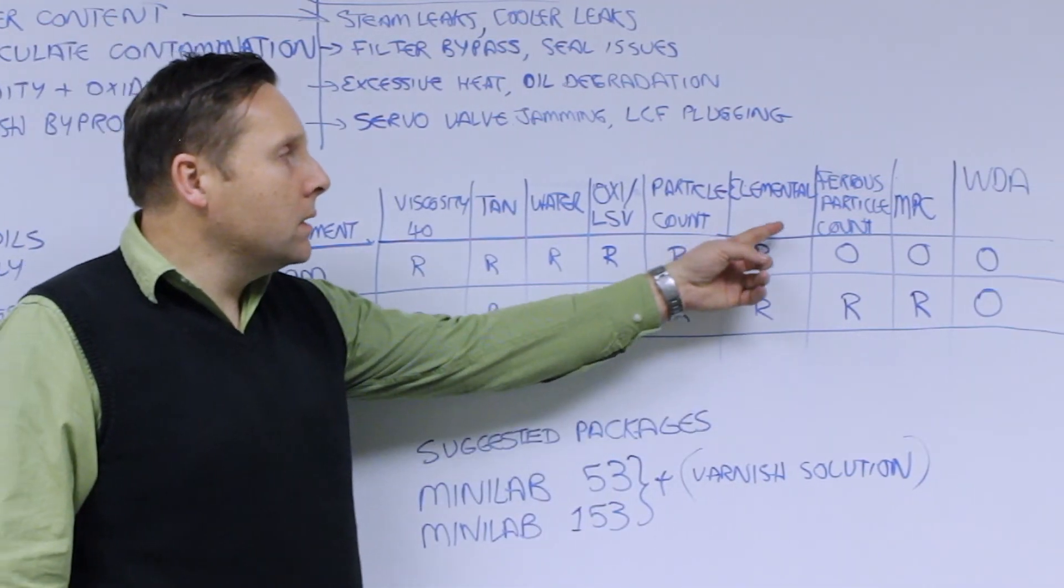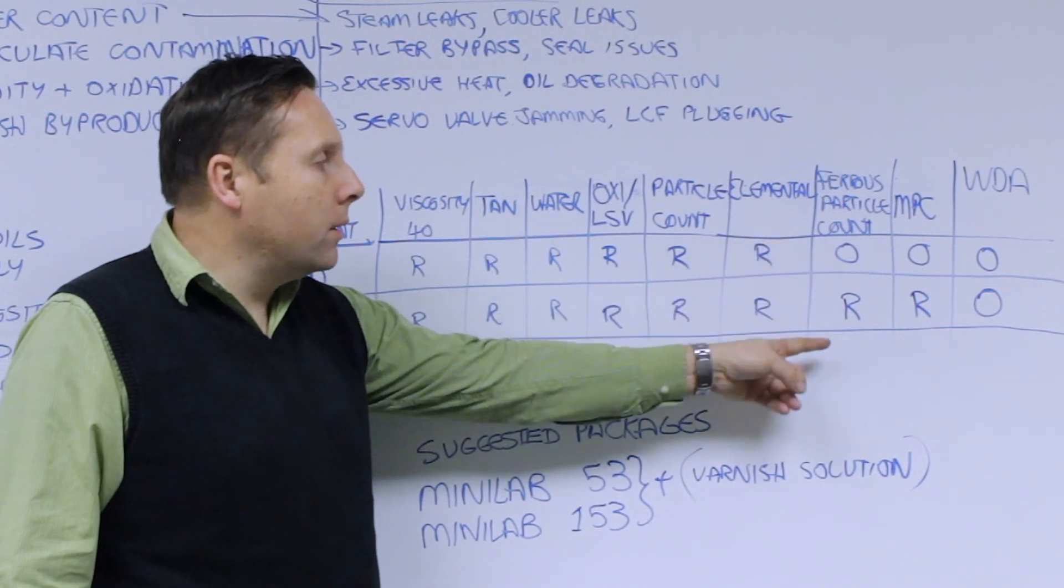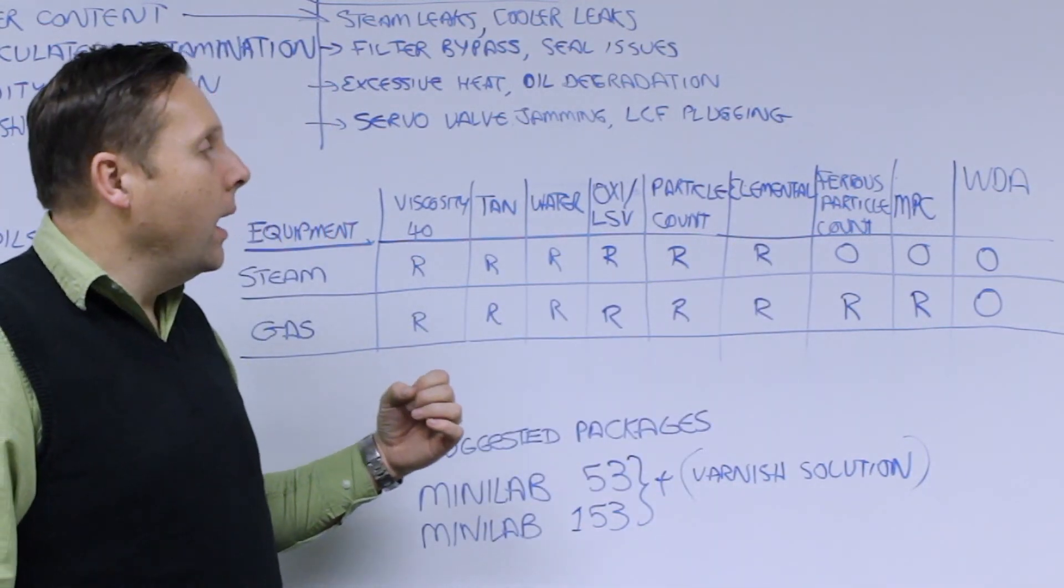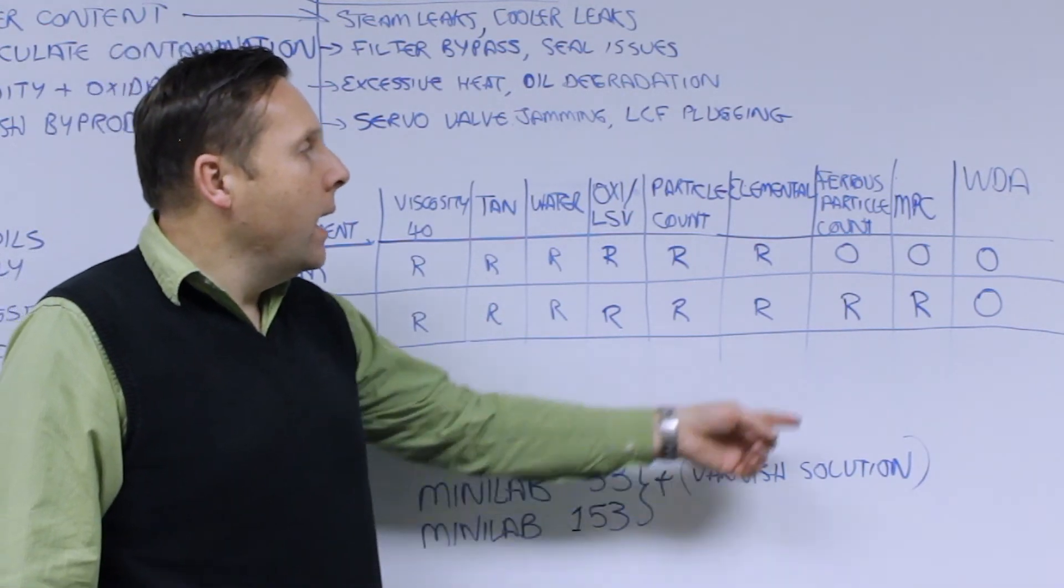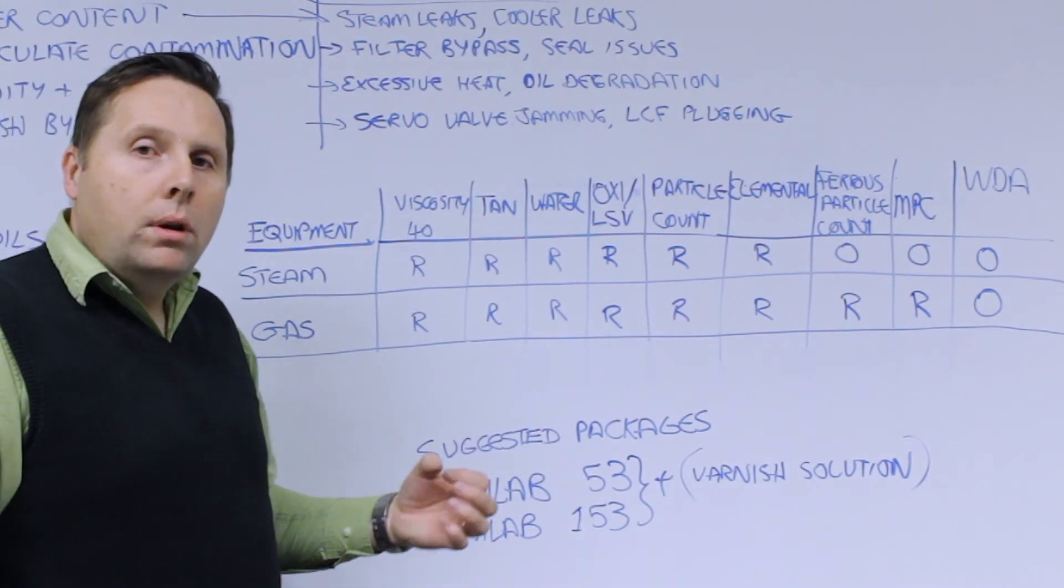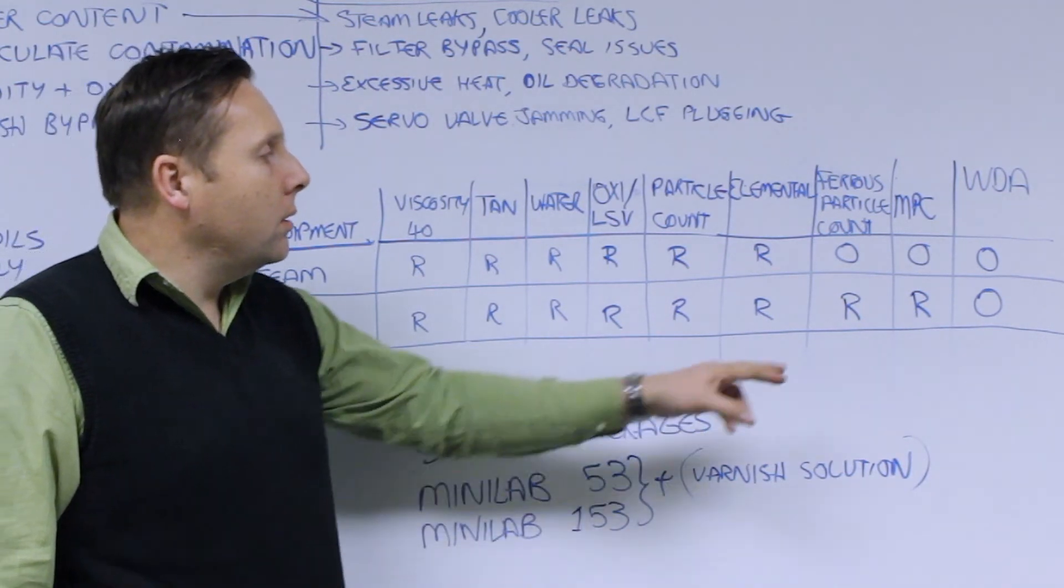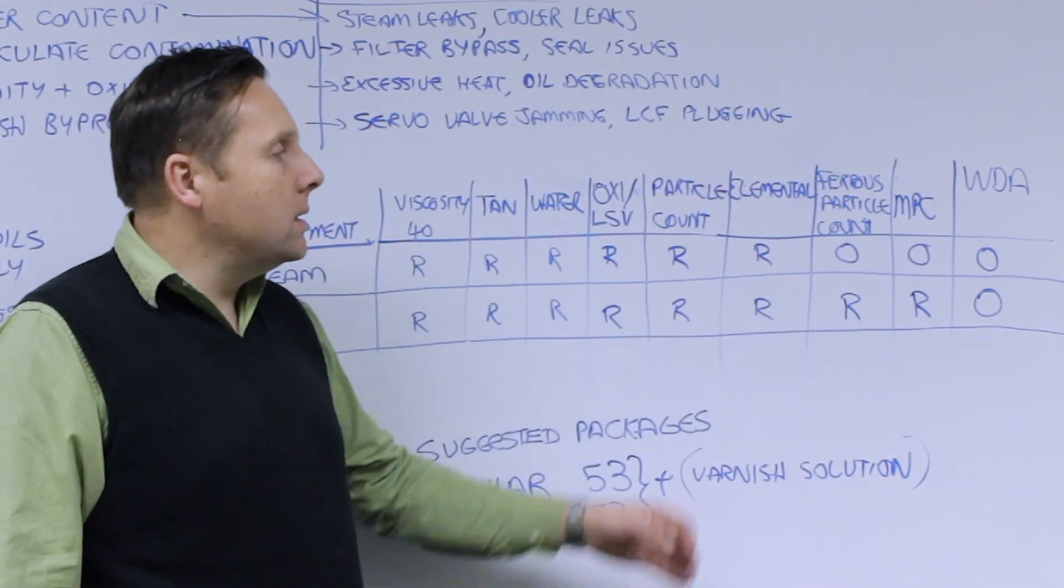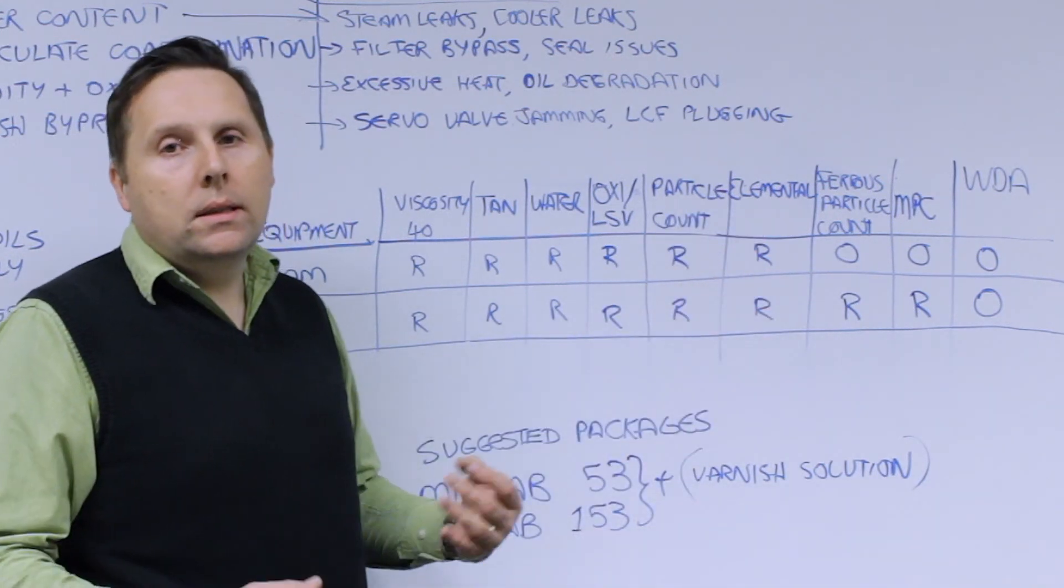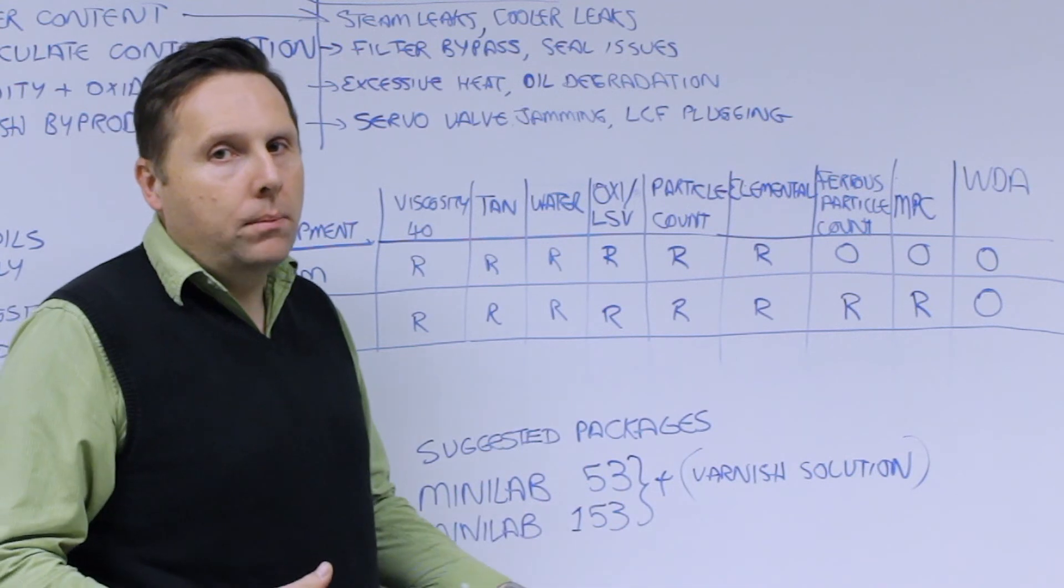We want to look at ferrous contamination, ferrous particle count on gas turbines, particularly of turning gear systems and not so much critical on steam turbines. We want to look at the micropatch colorimetry which is the varnish tester. That's definitely recommended for gas turbine systems. It's optional for steam turbines and of course wear debris analysis is optional anytime you indicate a potential problem.